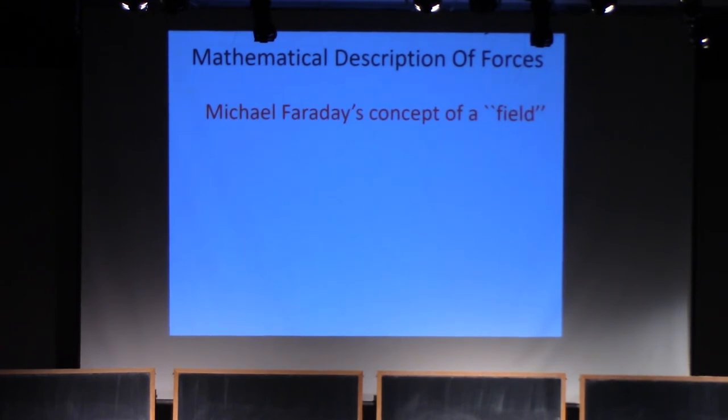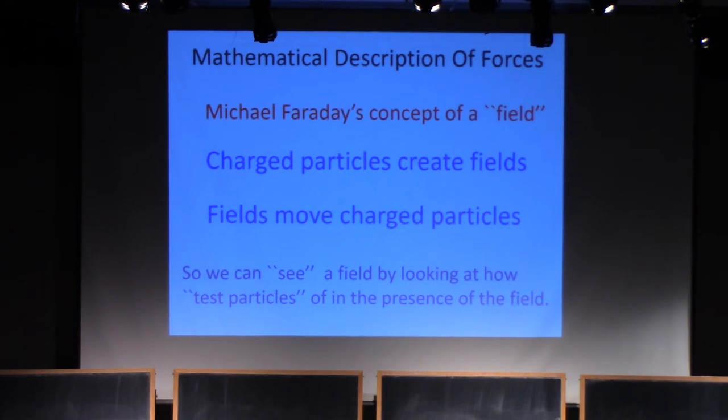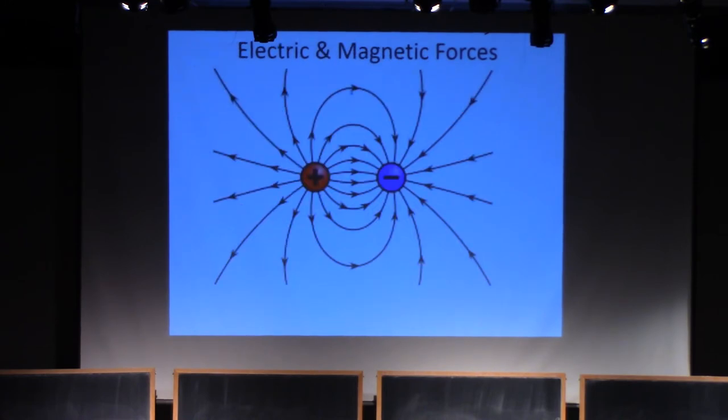The idea goes back to Michael Faraday in the early 19th century, the concept of a field. Charged particles create fields, and we detect fields by seeing how they move charged particles. We can see a field by looking at how the test particles move in the presence of the field. Here again, from high school physics, is the picture of an electric field created by a positive and negative electric charge. There's a direction, which is the initial direction a test particle will move in the presence of the field. And there's also a magnitude.